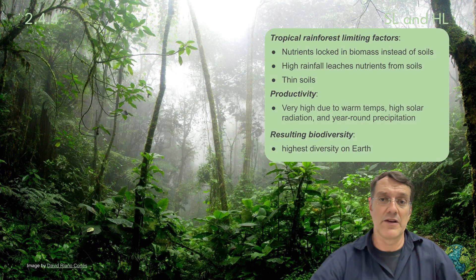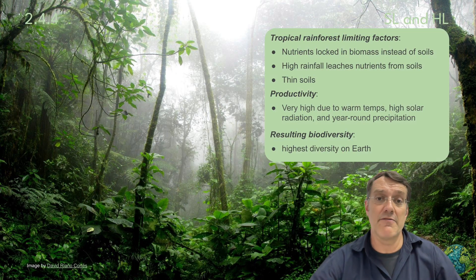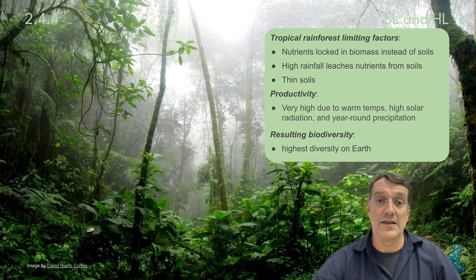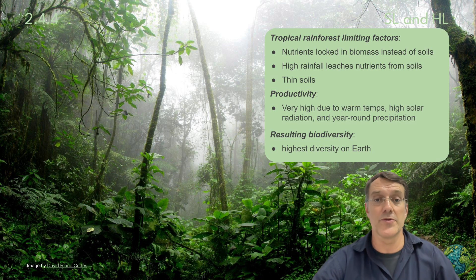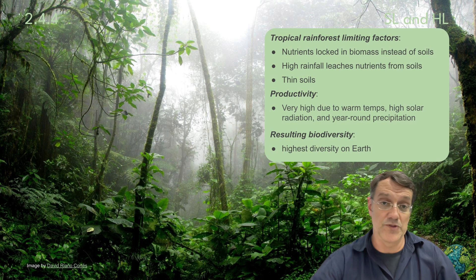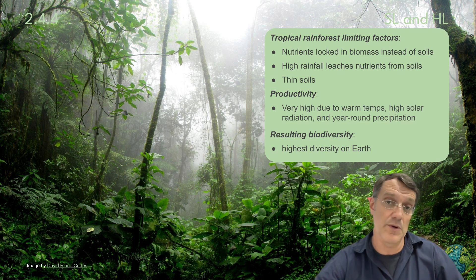Let's examine the tropical rainforest. Its key limiting factors include nutrients being locked in biomass rather than the soil, and high rainfall that leaches nutrients out of the soils. Despite these limitations, tropical rainforests have very high productivity due to year-round warm temperatures, high solar radiation, and very consistent precipitation every month. This results in the highest biodiversity of any terrestrial ecosystem on the planet.